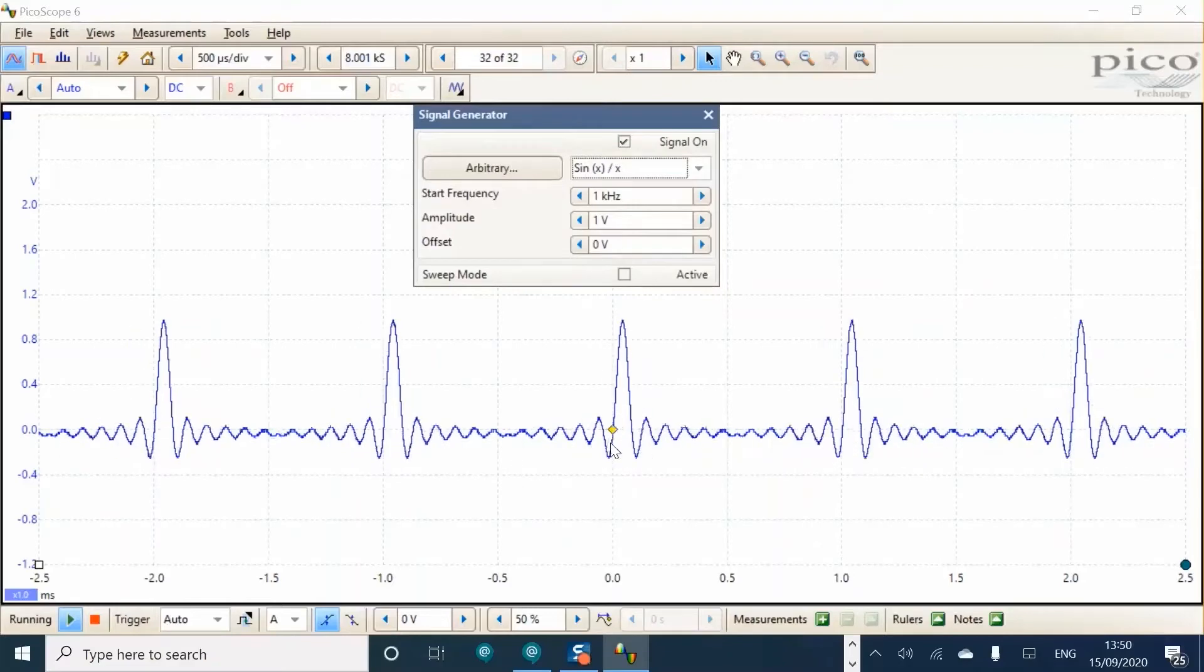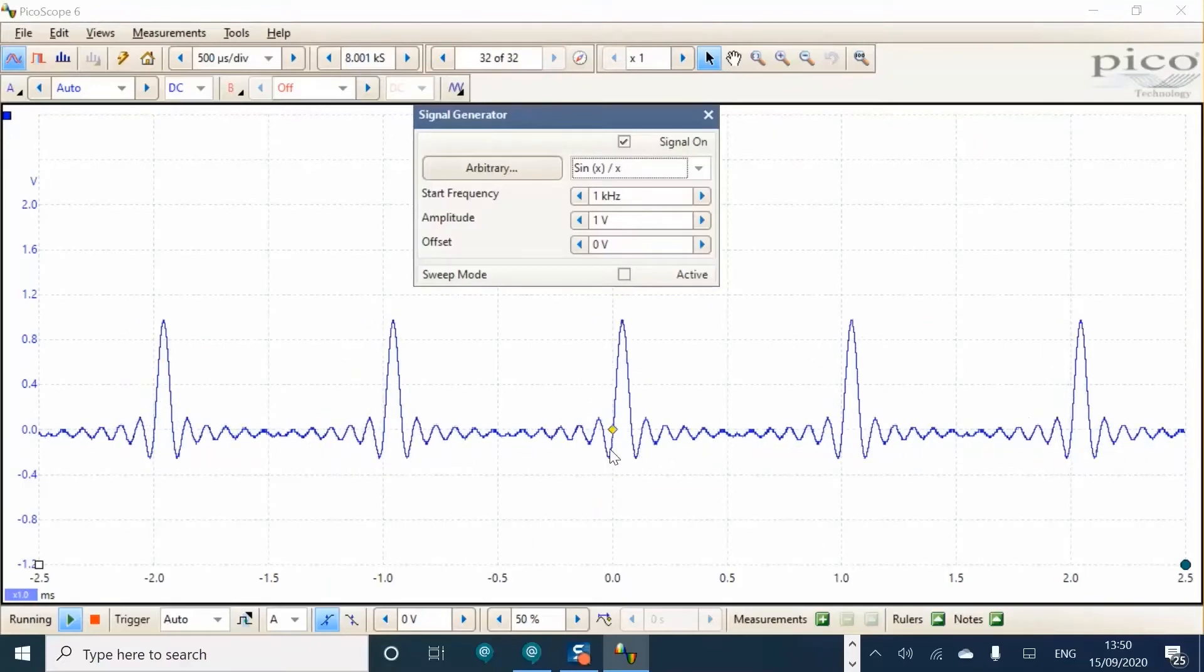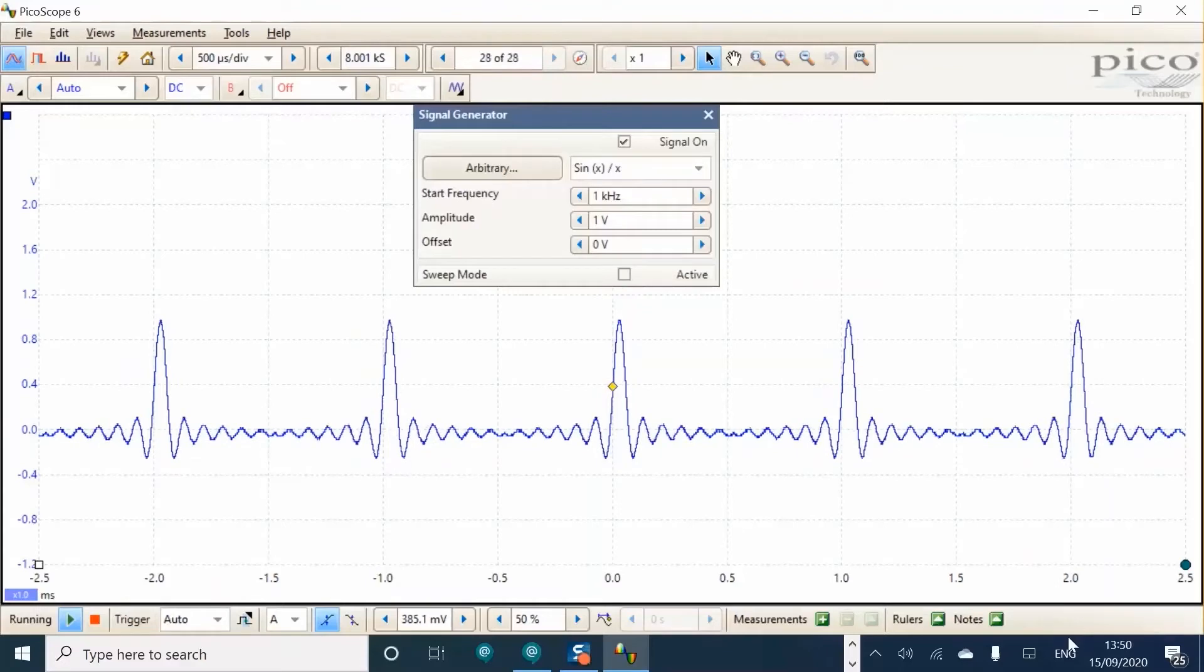Here you'll see that the trigger point is not isolating the signal effectively. So, all we need to do here is just move the trigger point up and then it always catches that main leading edge.